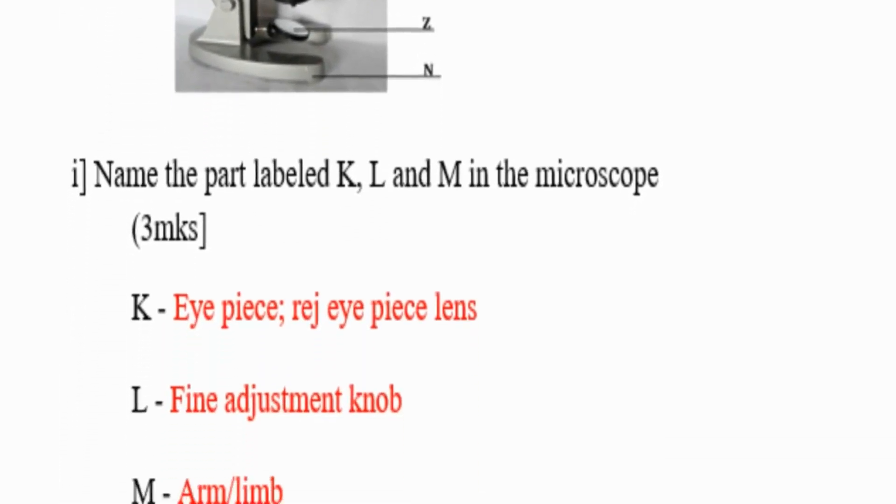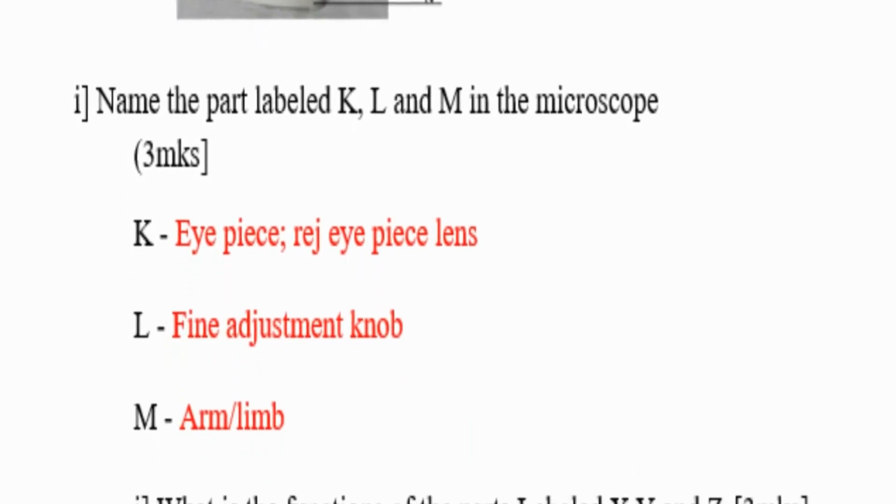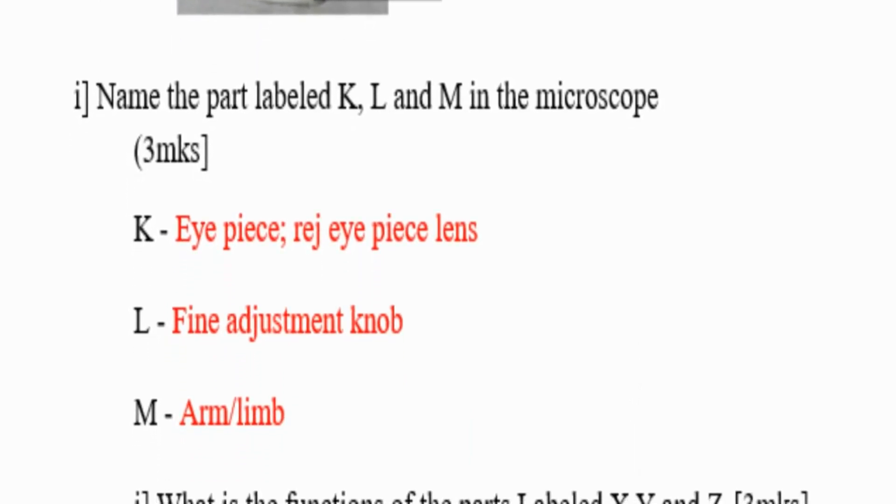K, L, and M. K is eyepiece, L is fine adjustment knob, M is arm or limb.